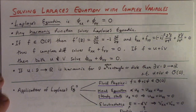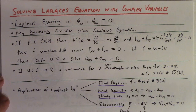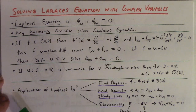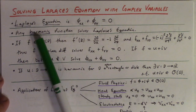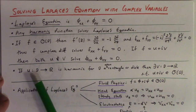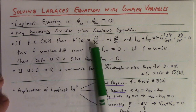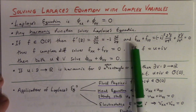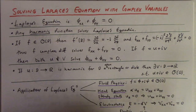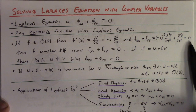The thing I'm going to talk about in this video is how to solve Laplace's equation with complex variables. Laplace's equation is φ_xx plus φ_yy equal to zero. Any harmonic function solves Laplace's equation — that's essentially a tautology. We also know that if we have a holomorphic function on a domain, f prime of z is the partial of f with respect to x, but it's also minus i times the partial of f with respect to y.